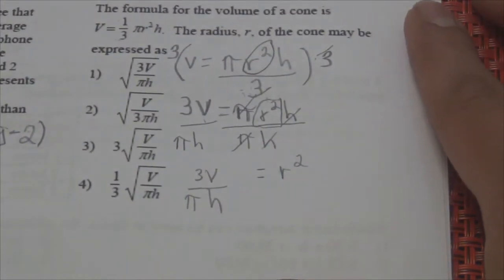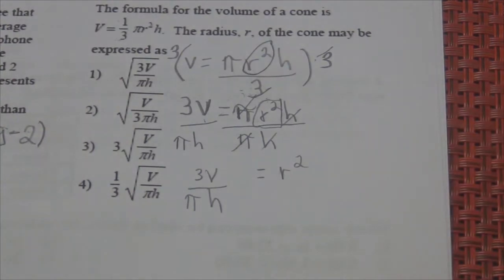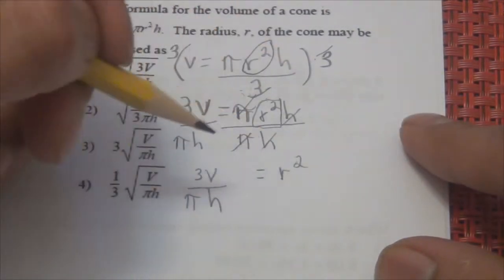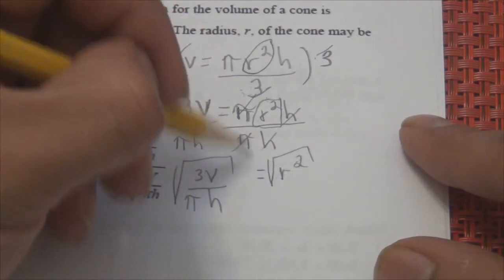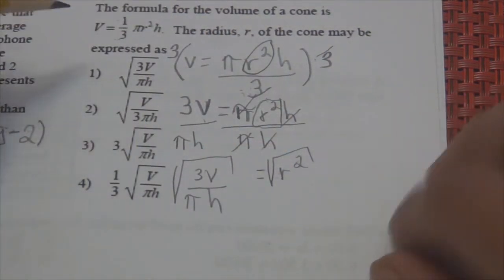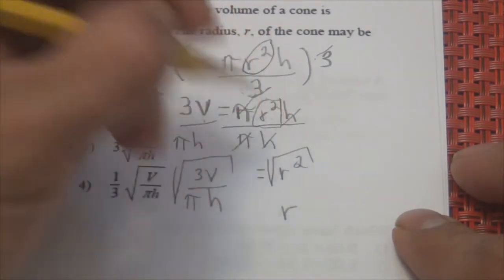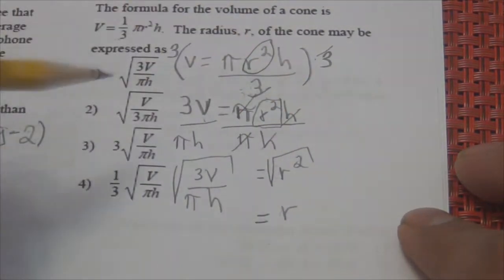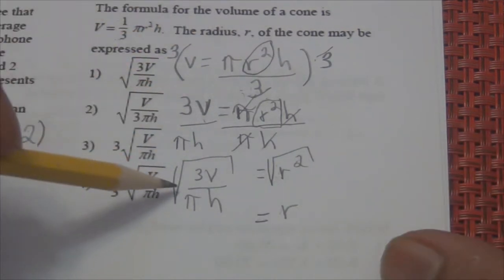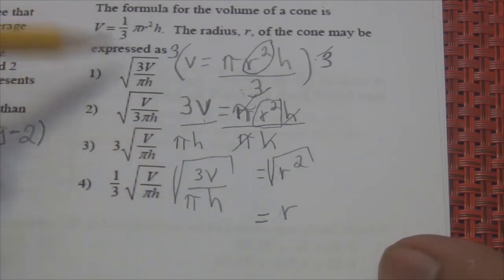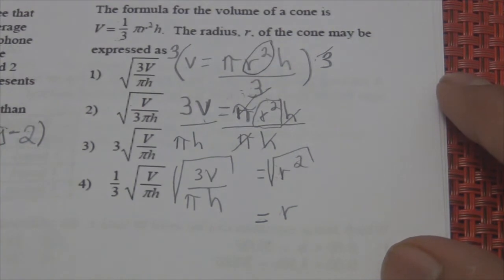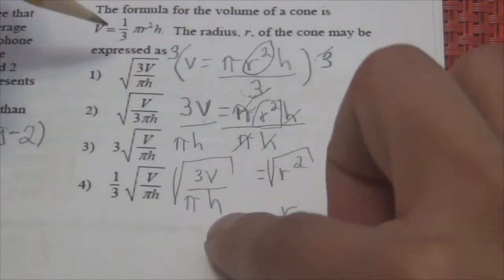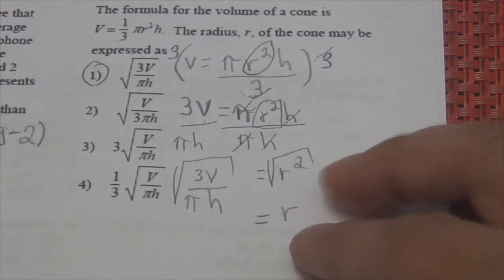I don't know how to simplify the square root of 3V over pi H further, but I just have to look at the choices. My first choice — does it look the same? 3V over pi H? Yes. So that is your answer. Notice you might get confused, but remember all the process we went through.